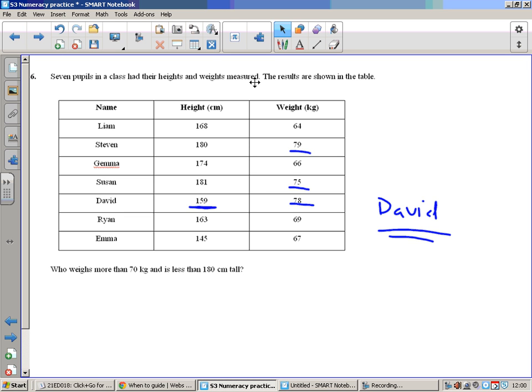Seven pupils in the class had their weights and heights measured. The results are shown in the table. Who weighs more than 70 kilograms? There are three people: Stephen, Susan, and David. And is less than 180 centimeters tall? Well, Stephen's not smaller than 180 centimeters, either is Susan. David is, so he's the only one that fits both, so that's him there.